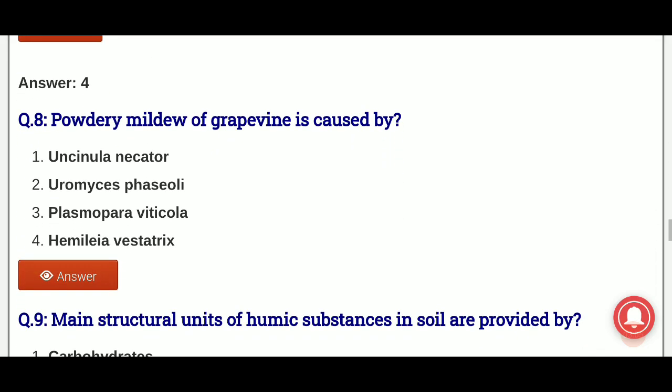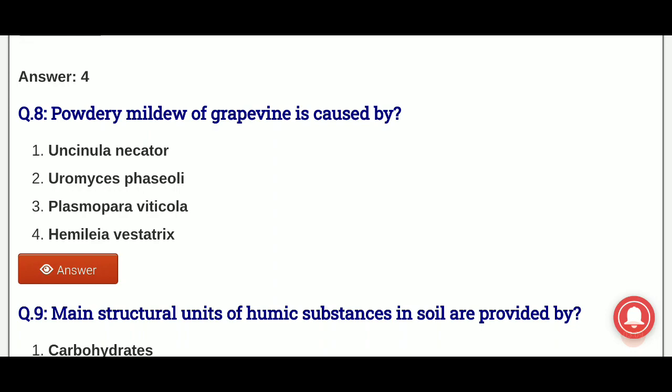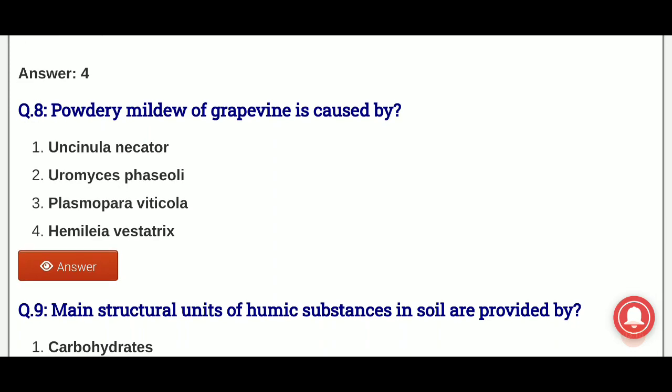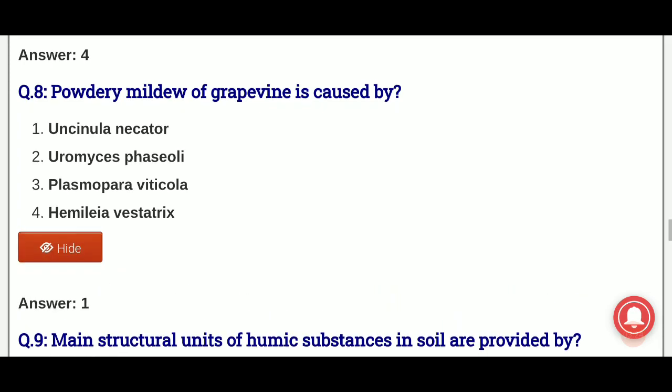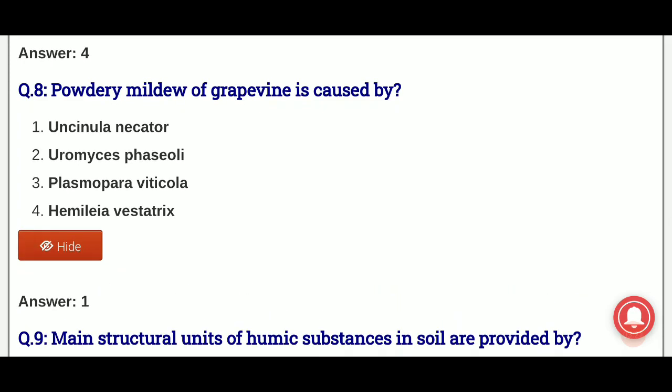Eighth question: powdery mildew of grapevine is caused by? What is the causal organism of powdery mildew disease in grapevine? The options are: Uncinula necator, Uromyces phaseoli, Plasmopara viticola, Hemileia vastatrix. And the answer is option 3, that is Plasmopara viticola. Note: Hemileia vastatrix is the causal organism of coffee rust.